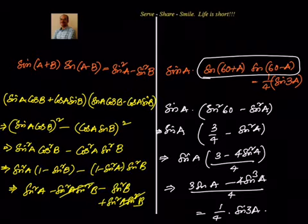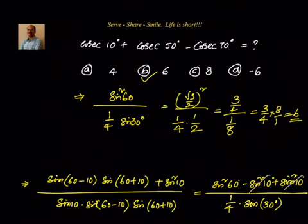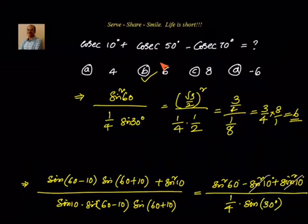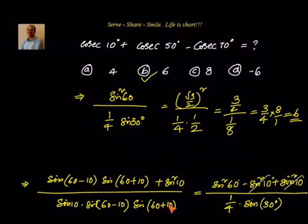Let's recap this particular problem. We were asked to find cosecant 10 plus cosecant 50 minus cosecant 70. First, we transformed them into sine because we are more comfortable with sine and cos formulas. Then we applied transformations to sine 70 minus sine 50. After that, we applied the formula sine(a+b) · sine(a−b), and in the denominator we got sine a · sine(60 minus a) · sine(60 plus a), where we used the formula 1 by 4 · sine 3a. Using these two formulas, cosecant 10 plus cosecant 50 minus cosecant 70 is equal to 6.